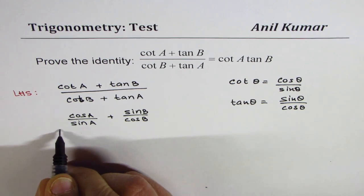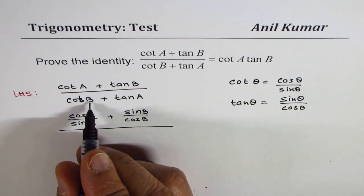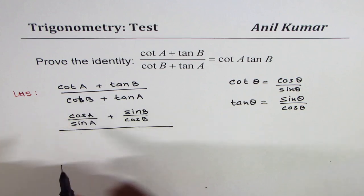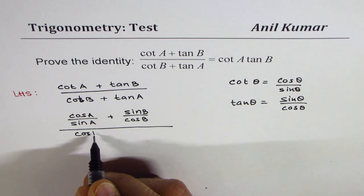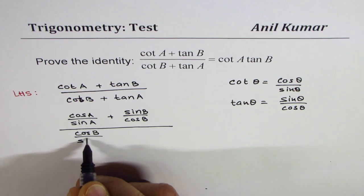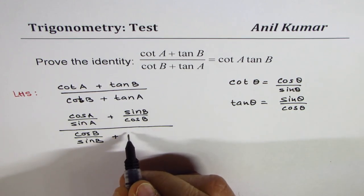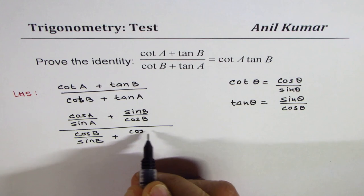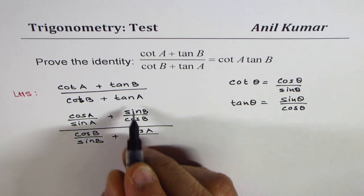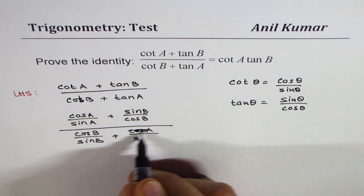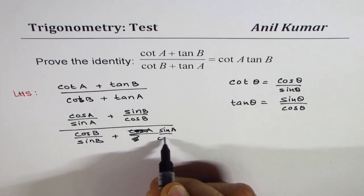In the denominator, for angle B, cot B means cos B over sin B. And for tan A, that is sin A over cos A. So the full expression is now written in terms of sine and cosine.